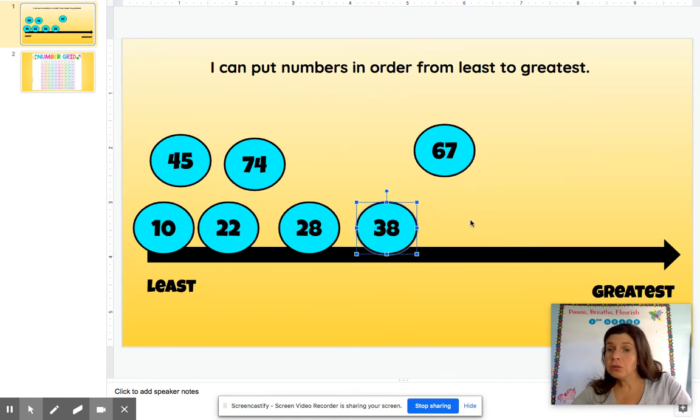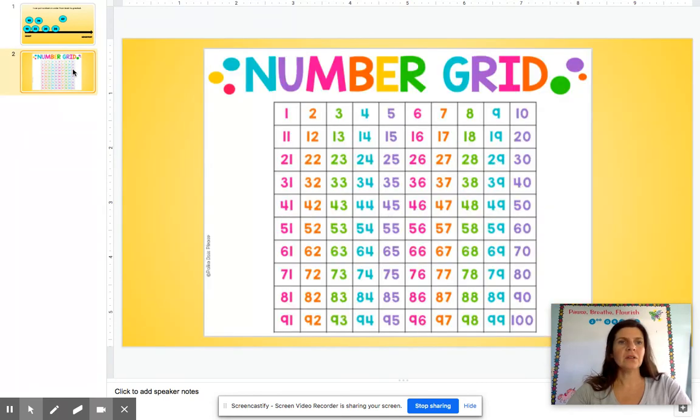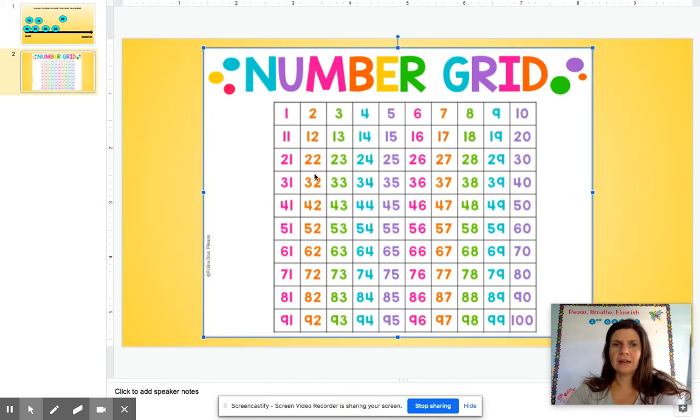If I'm not too sure, the other option I have is to look at the number grid and the number grid has all the numbers in order all the way to 100. So I can look here and I know that there's 22 right there, and then 28 is here. So I know that 28 is greater than 22.